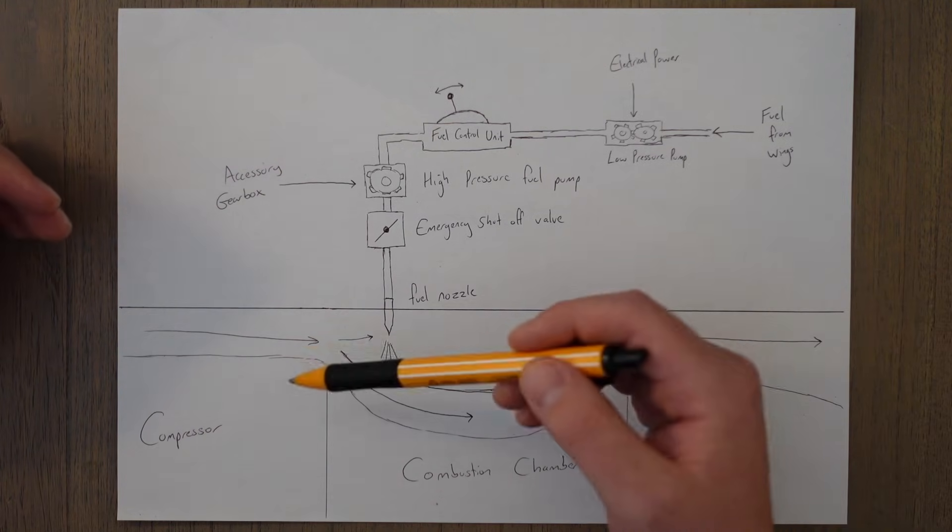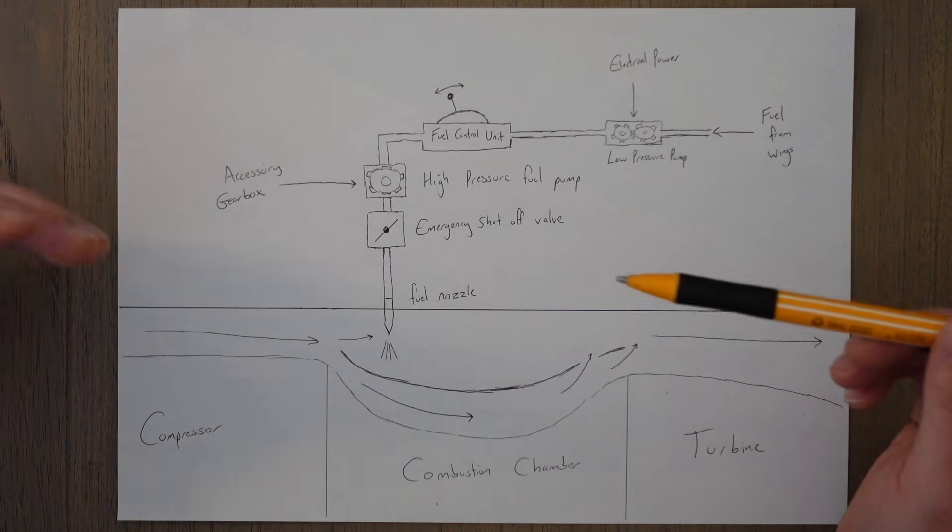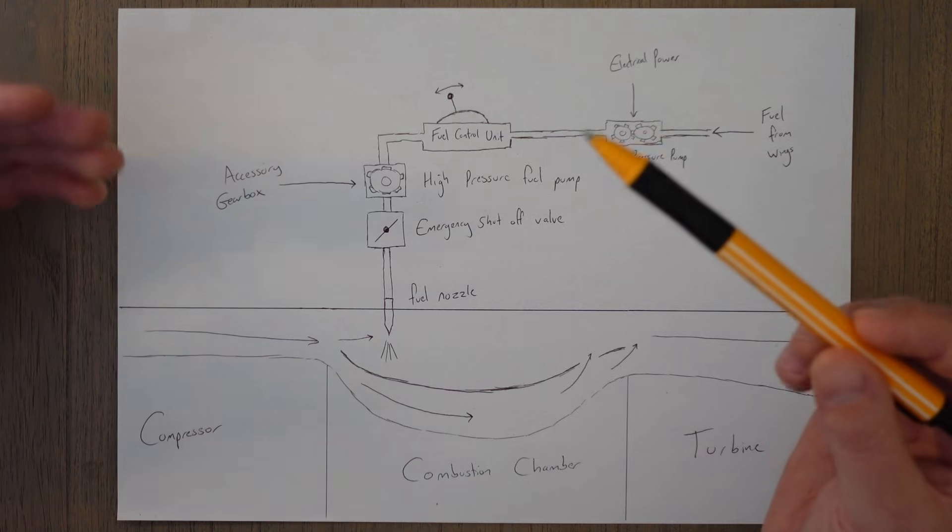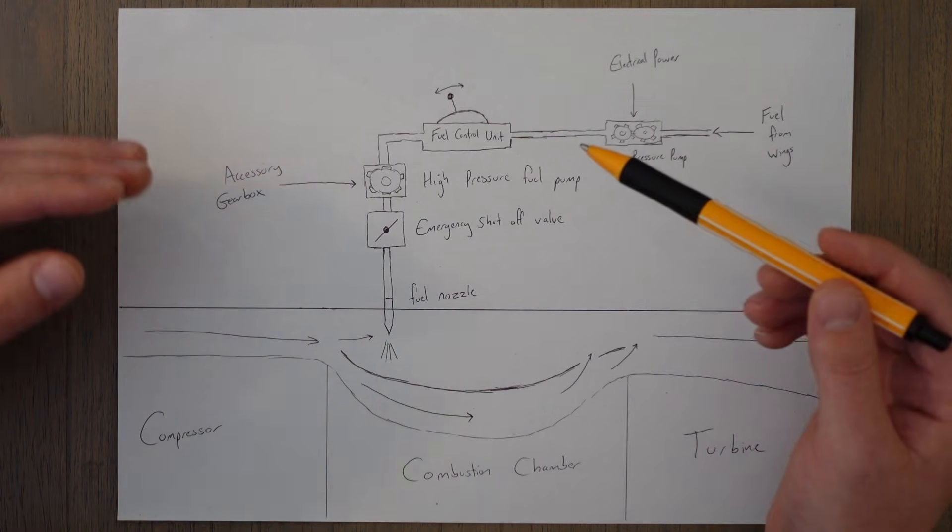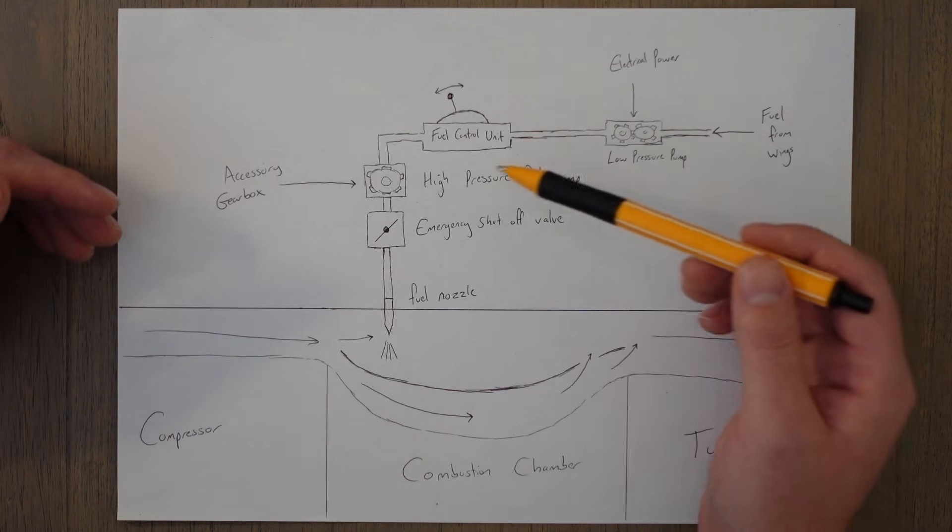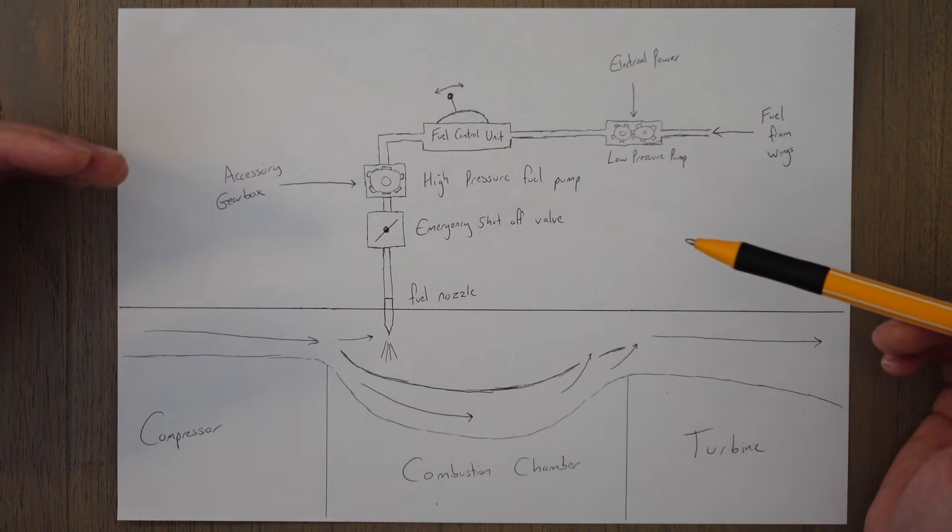It does this depending on the air inlet temperature, the pressure, the engine RPM, the exhaust gas temperature, and thrust lever angle or position. And through careful monitoring of all these parameters, the fuel control unit will know exactly the right amount of fuel to command the high pressure pump to spray in and achieve the desired thrust output.